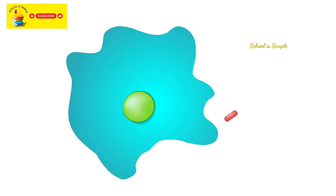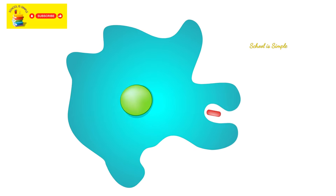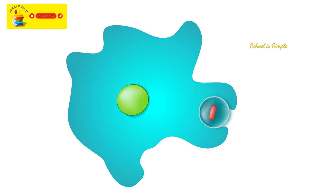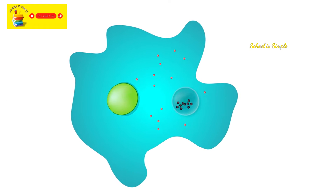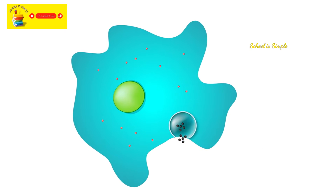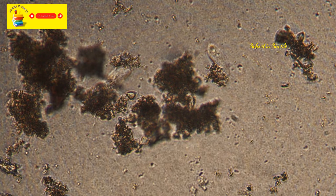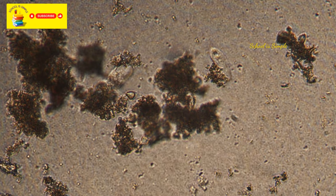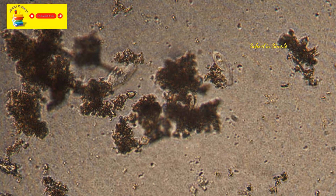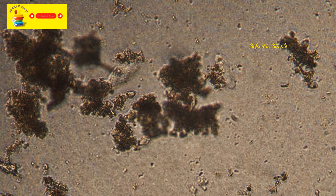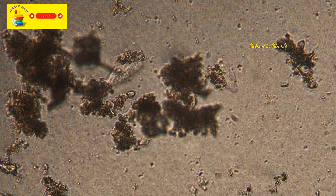Food: most amoebas are phagocytic, meaning they engulf and process their food by enveloping it with their cell membrane — a process known as phagocytosis. Habitats: amoebas inhabit water environments such as freshwater ponds, streams, and marine habitats. They can also be found in soil and certain terrestrial surroundings.